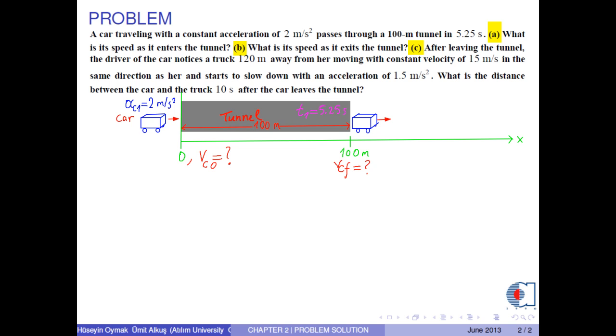Part C: After leaving the tunnel, the driver of the car notices a truck 120 meters away from her, moving with a constant velocity of 15 meters per second in the same direction as her and starts to slow down with an acceleration of 1.5 meters per second squared. What is the distance between the car and the truck 10 seconds after the car leaves the tunnel?